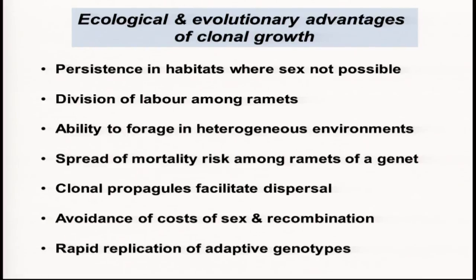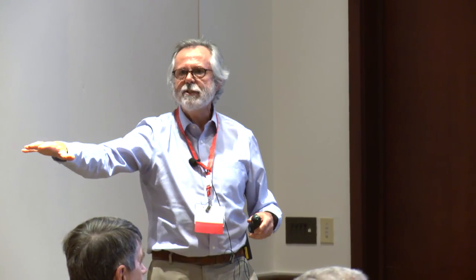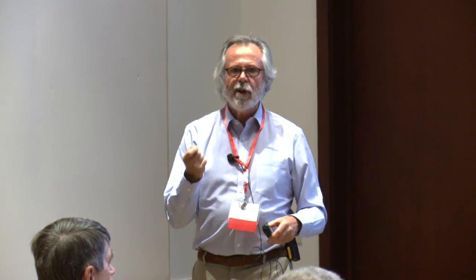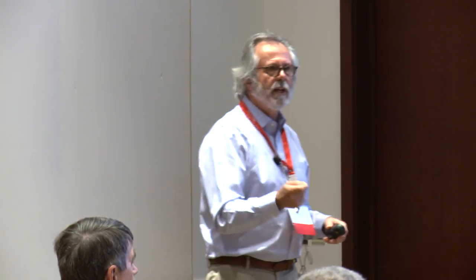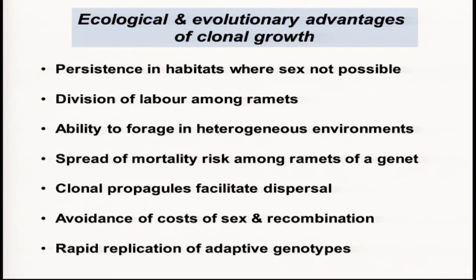There is also bet hedging to clonal propagation, in the sense that there is a spread of mortality across ramets of a clone. Parts of a clone may be subjected to very unfavorable conditions with strong mortality, but as long as some ramets survive, the genet survives. Clonal propagules also facilitate dispersal, just like the dispersal of seeds — particularly in aquatic plants, clonal propagules are a very efficient means of moving genotypes around the landscape. And then there are evolutionary advantages: the avoidance of costs of sex and recombination, and the rapid replication of adaptive genotypes.